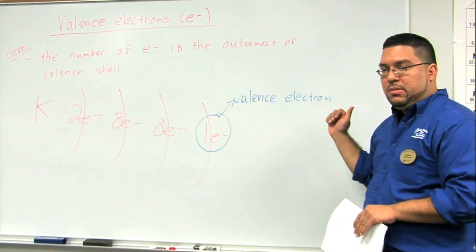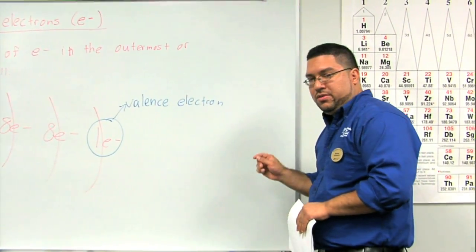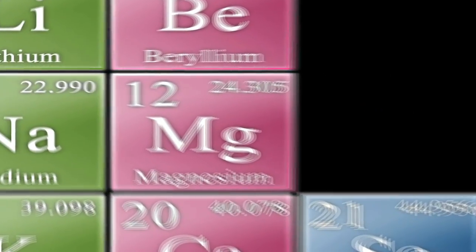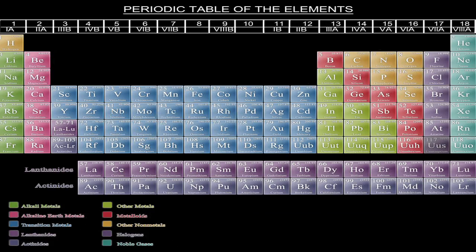Why don't we look at the periodic table and try to figure out the number of valence electrons for a few other elements. We could try magnesium, for example. Magnesium is in the 2A column. So then you would be able to see that magnesium has two valence electrons.